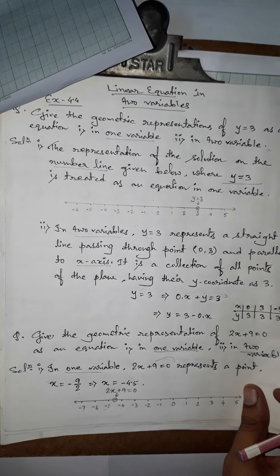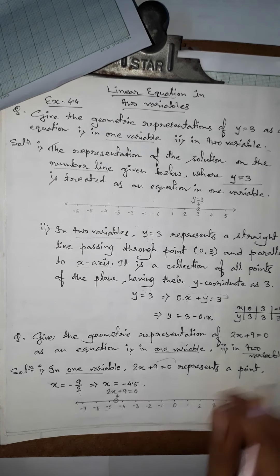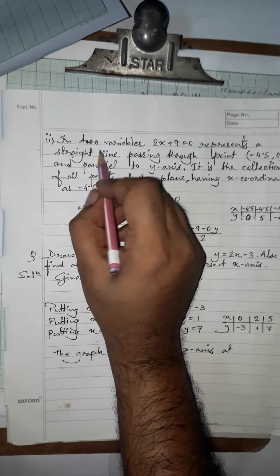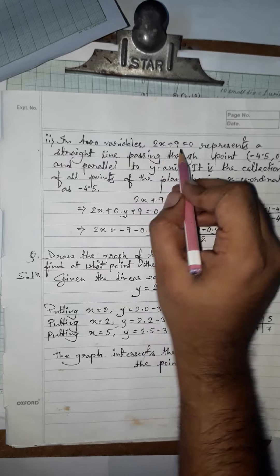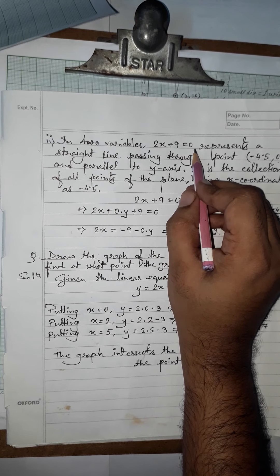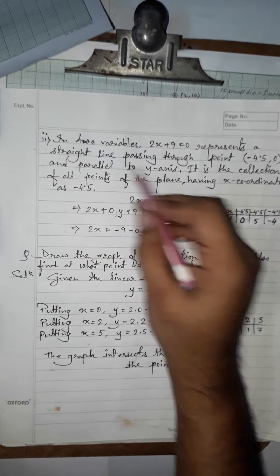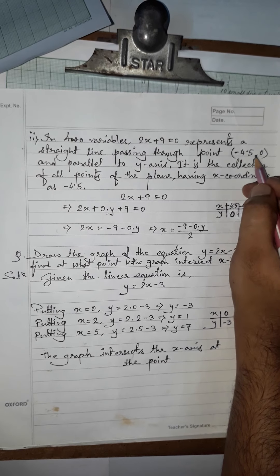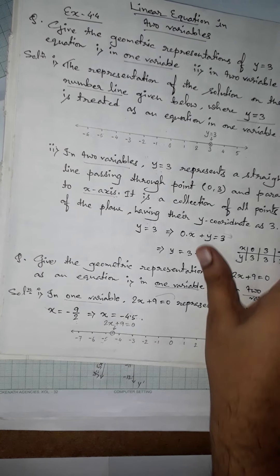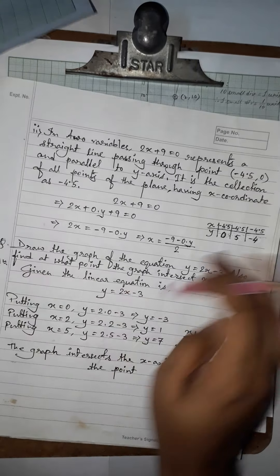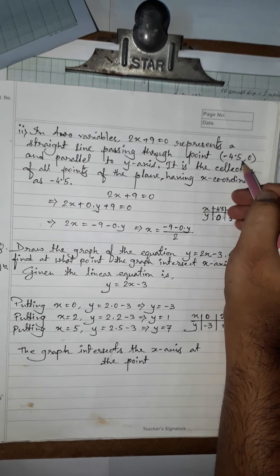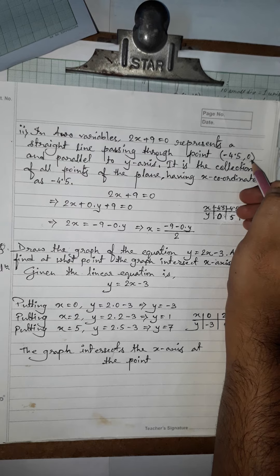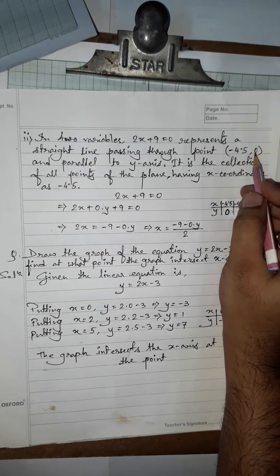In this equation, x is present but y is missing, because the coefficient of y is 0. Now for two variables: 2x + 9 = 0 represents a straight line passing through the point (−4.5, 0). The x-coordinate is −4.5 and the y-coordinate is 0, since y is missing and its coefficient is 0. This line is parallel to the y-axis because only the x-coordinate is given.